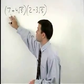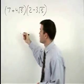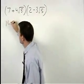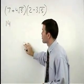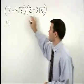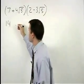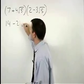The product of the first term, 7 times 2, is 14. The product of the outer term, 7 times negative 3 root 5, is negative 21 root 5.